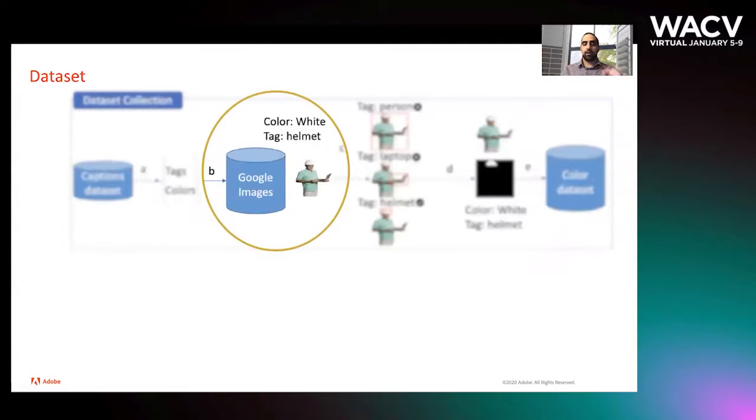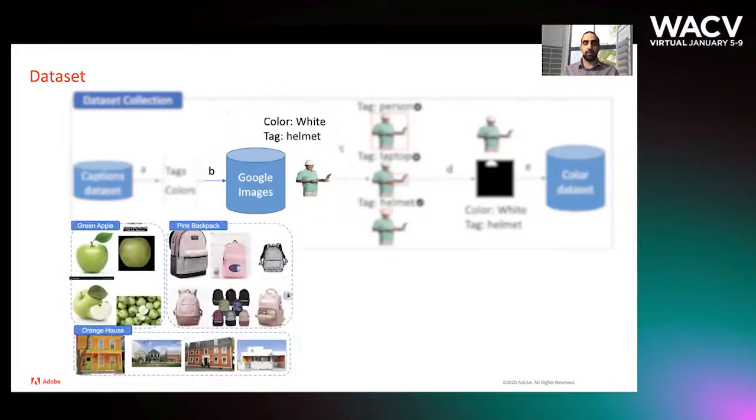Then for every color and tag pair we combine them together and make a query in Google Images and download all the images. Here are some examples: green apple, pink backpack, orange house, and white helmet.